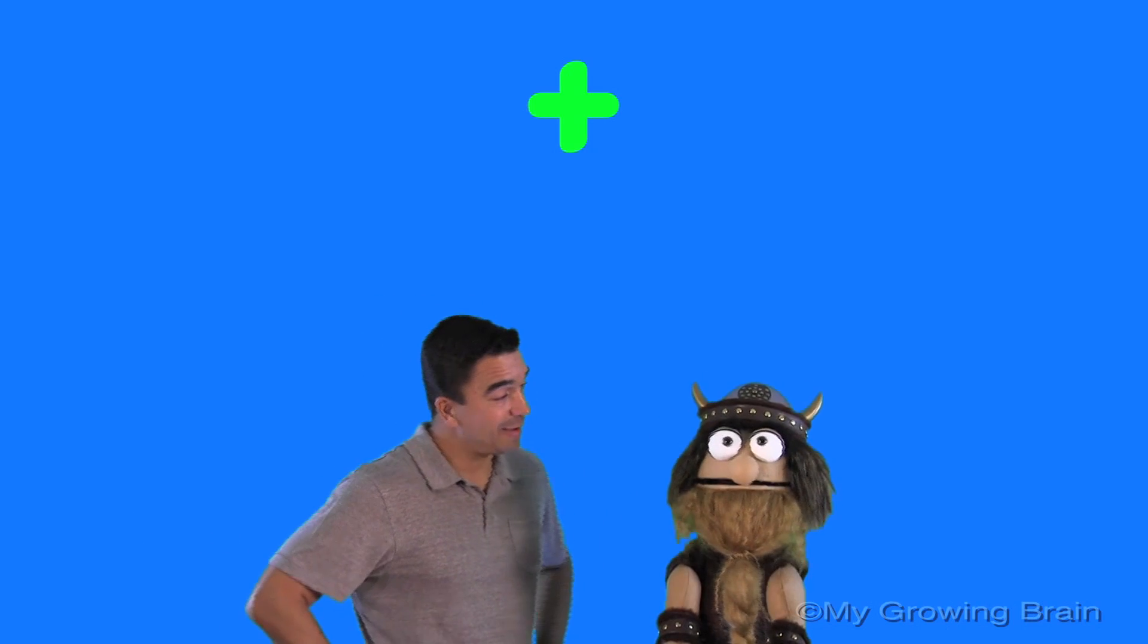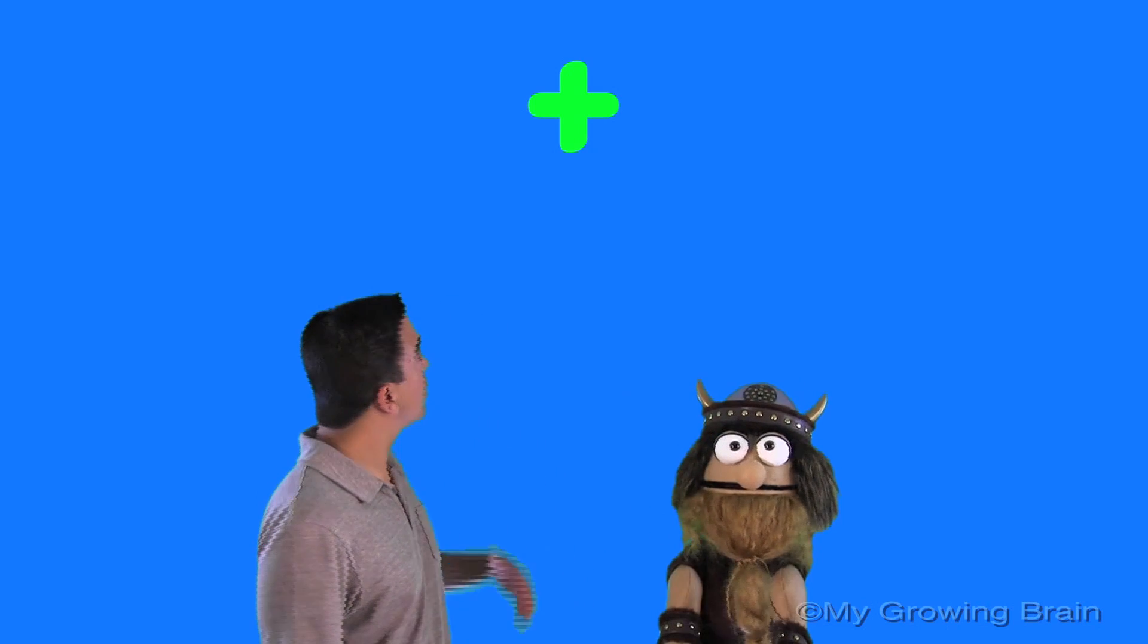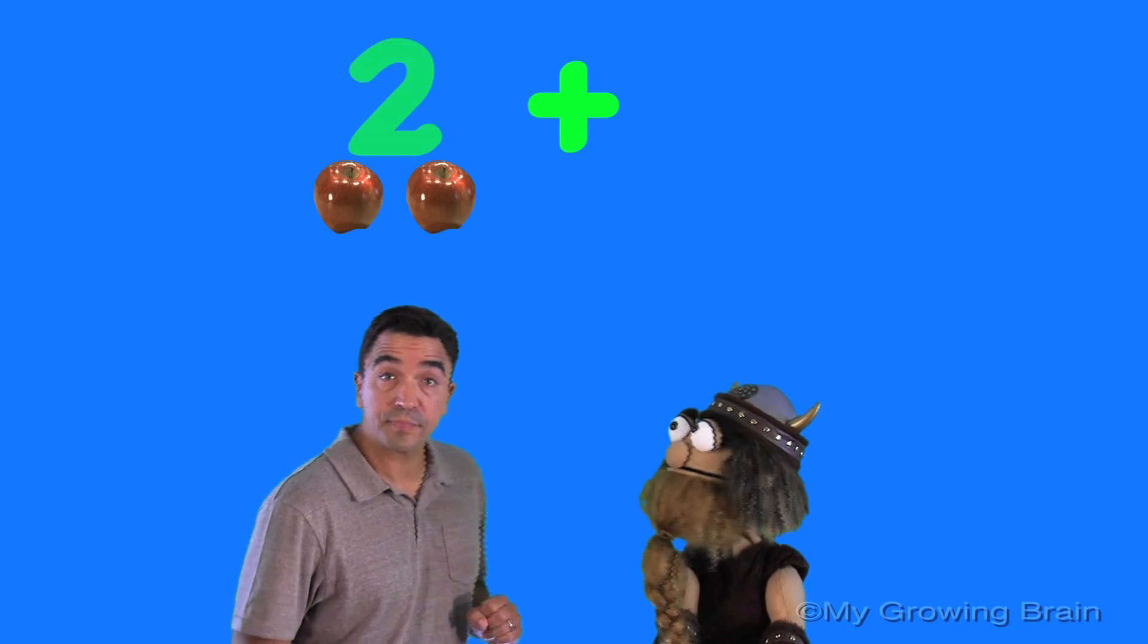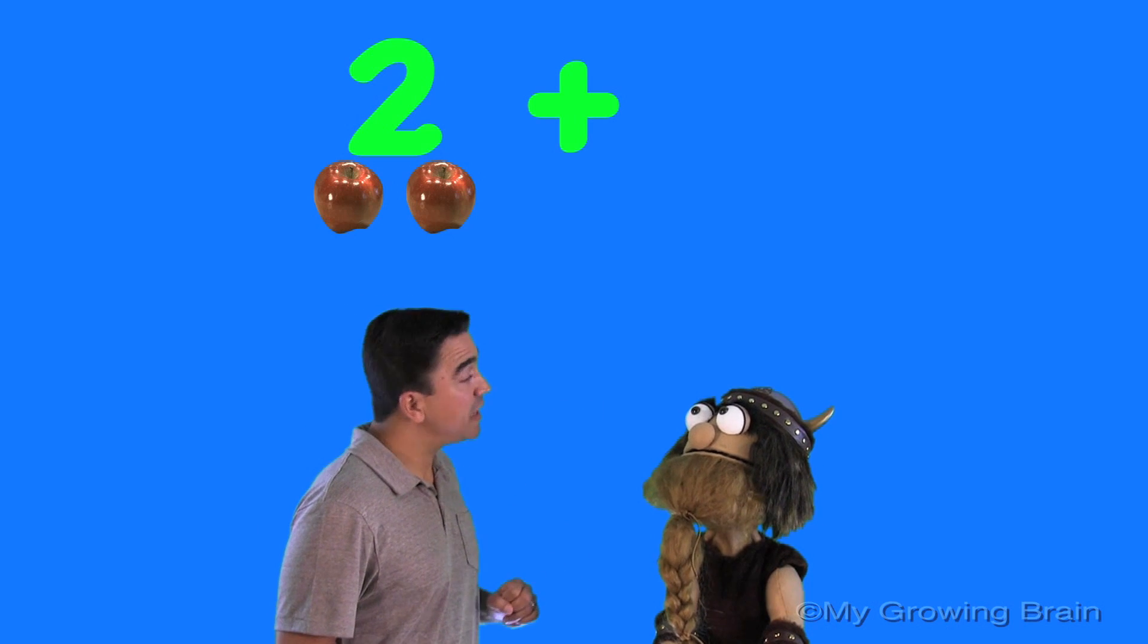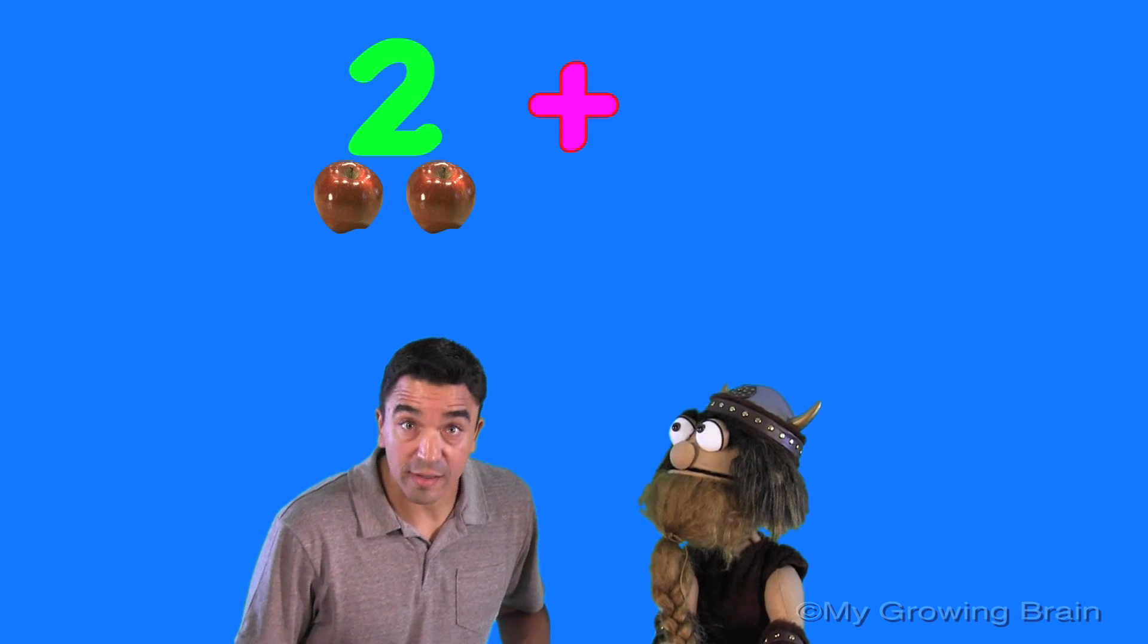Well, how does that work, Coach Mike? Well, let's say we have a group of apples. Two apples. One, two. I like apples, Coach Mike. Oh, I love apples, too. And then we have the plus sign.